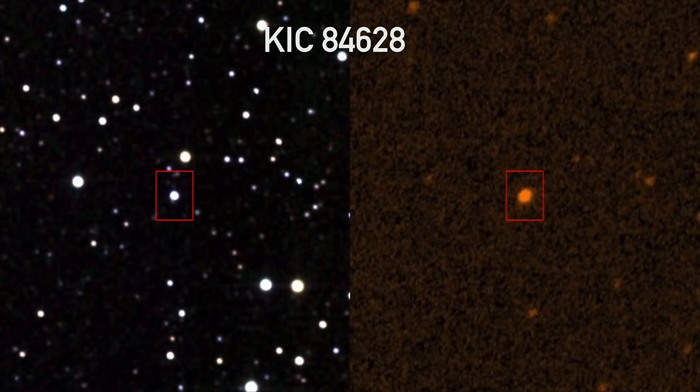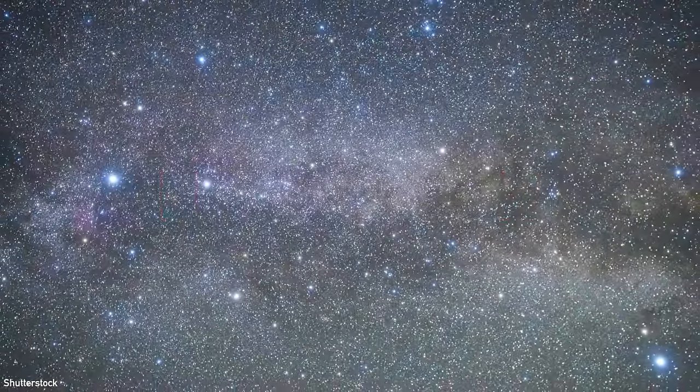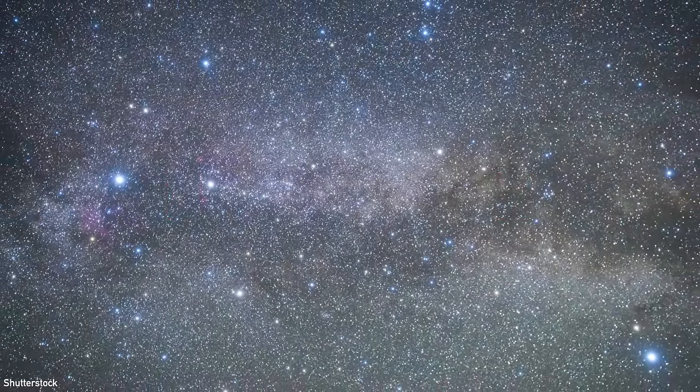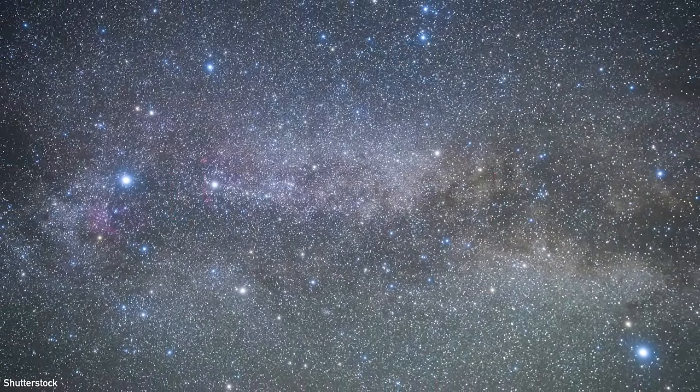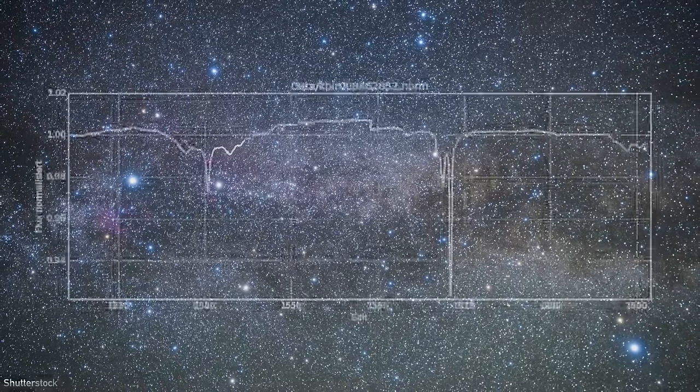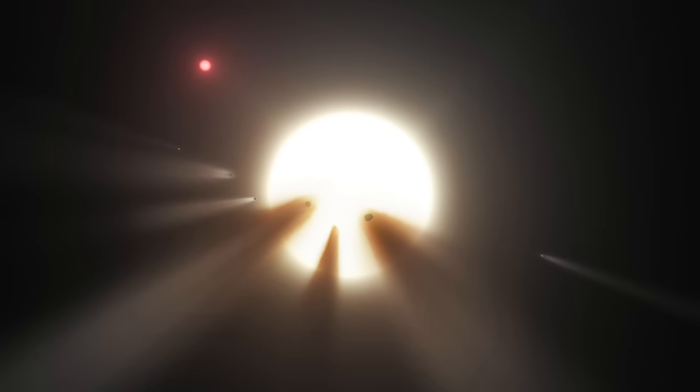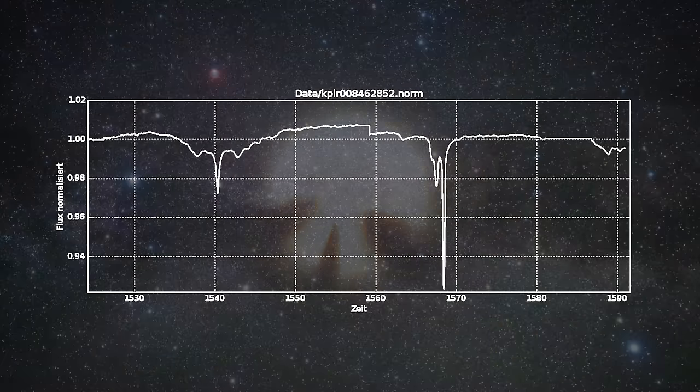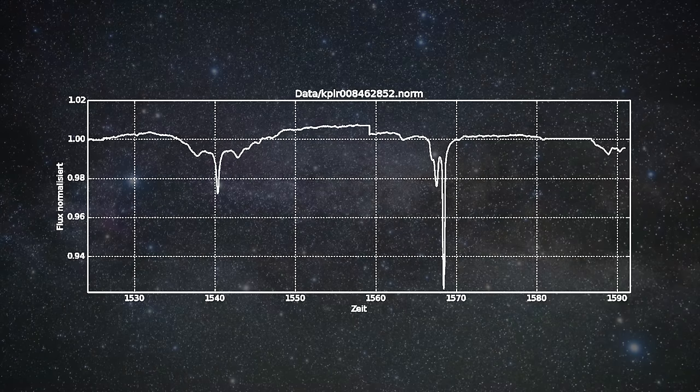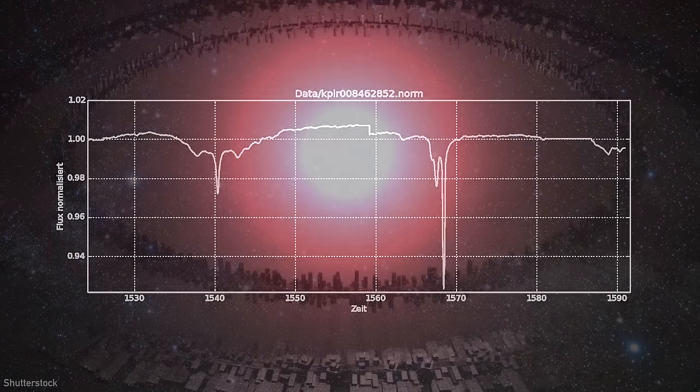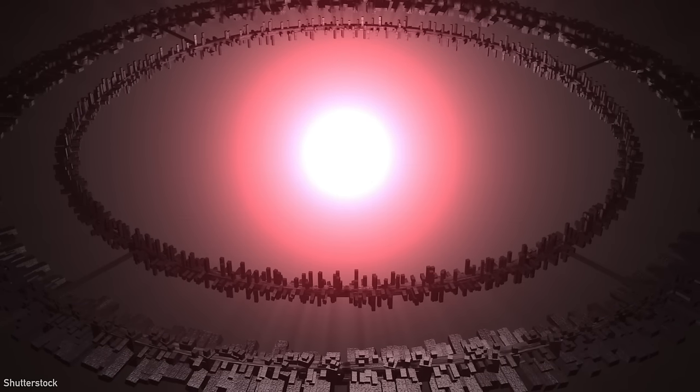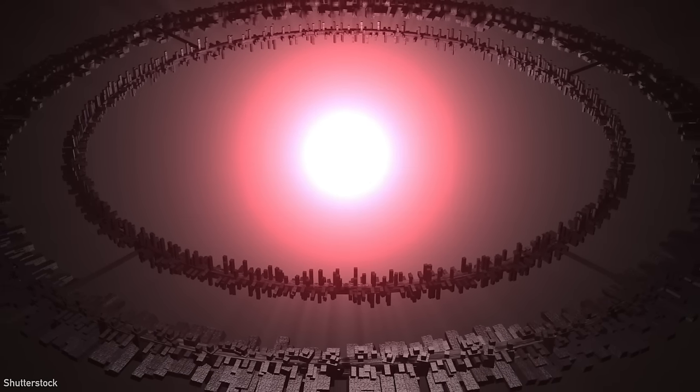KIC 8462852, also known as Tabby's star, is a star in the Cygnus constellation of the Milky Way. Scientists observed the light level of this star for years, and they regularly came across irregularities like this. Maybe there are comets or a debris field obstructing our view of this star, but astronomers have doubted that either of those could dip the light levels by this much. This has led some to suggest that an alien civilization has built these orbiting satellites around their sun, but we may never know for certain.